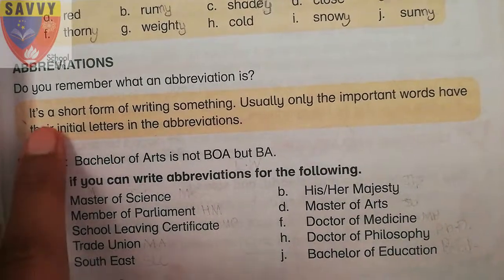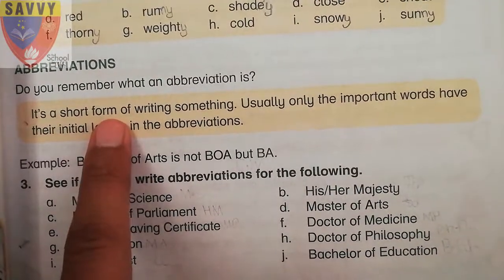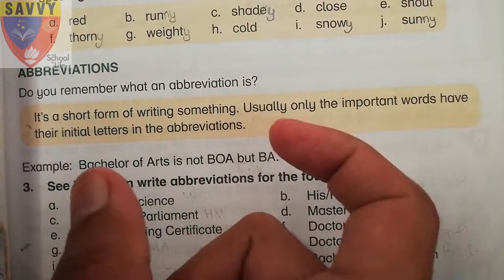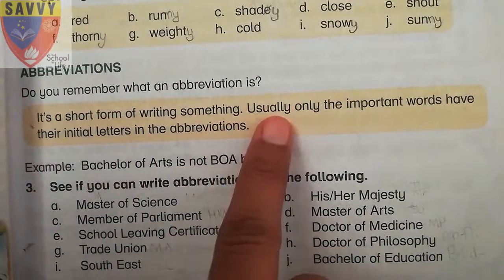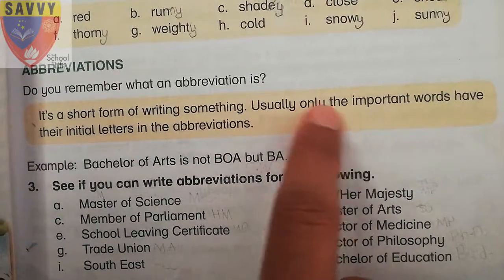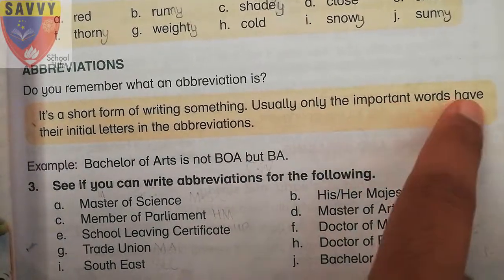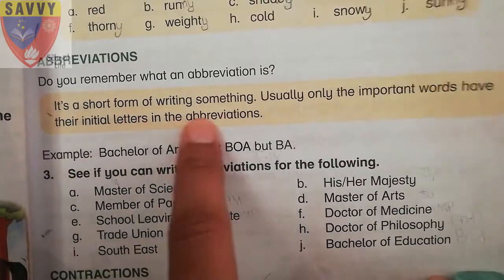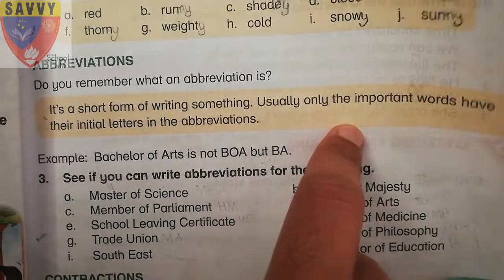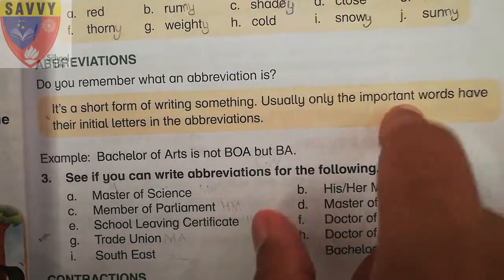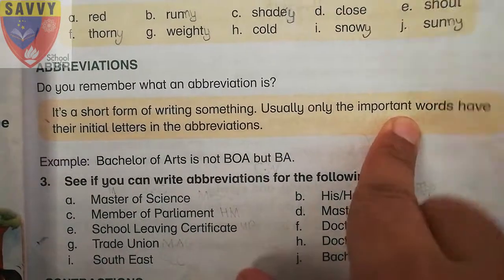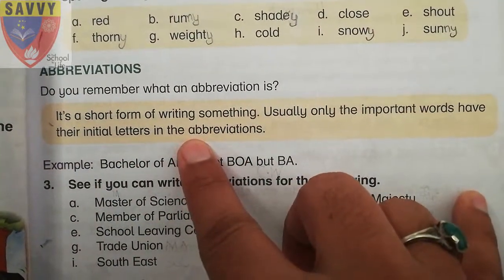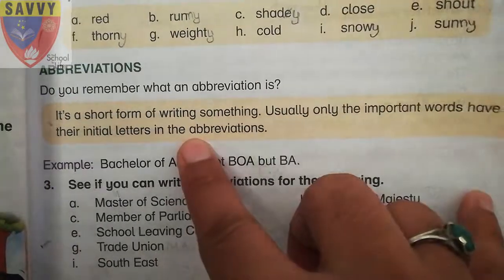Abbreviations — it's a short form of writing something. Usually, only the important words have their initials in abbreviations. In the normal way, the important words are the initials, and the initials are the abbreviations.